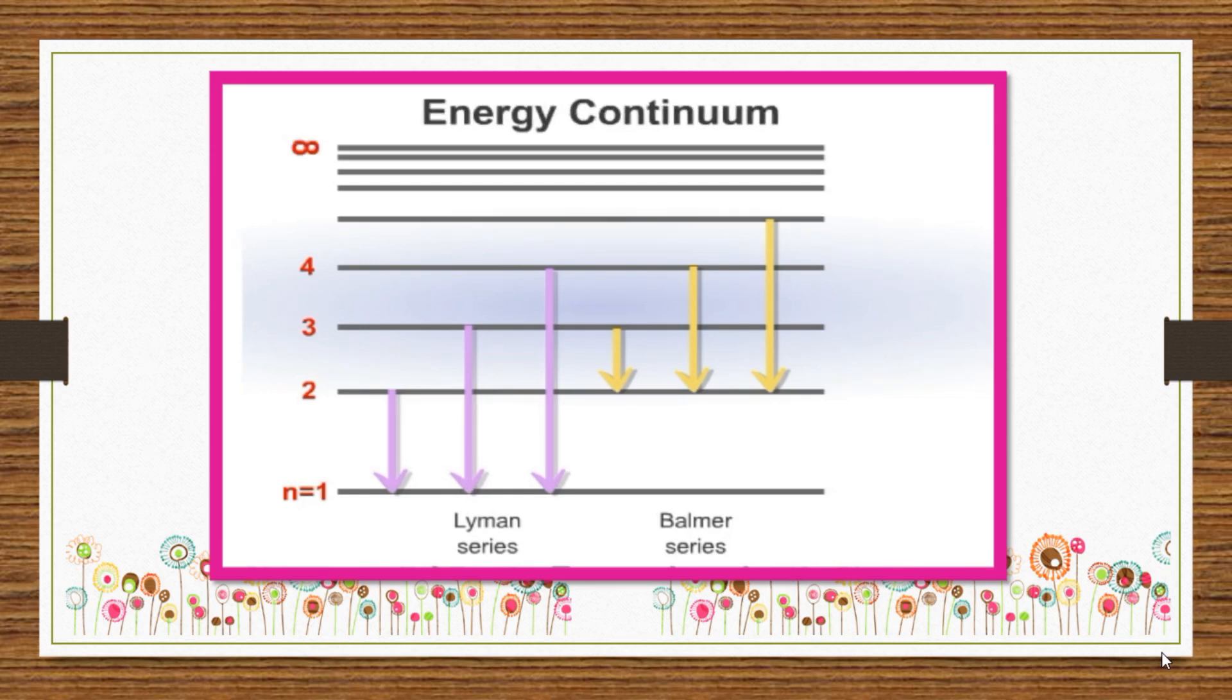In the continuum, there is no attraction between the proton and the electron. The electron is free to move, escaping the positively charged nucleus. This process is called ionization.